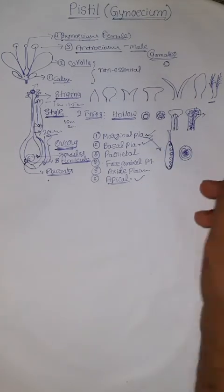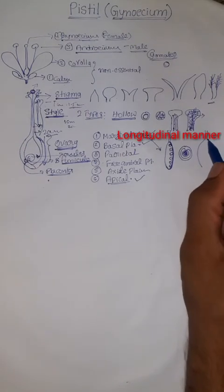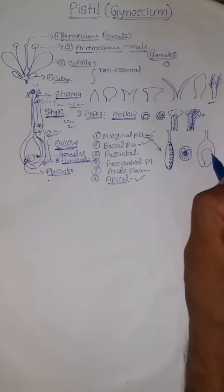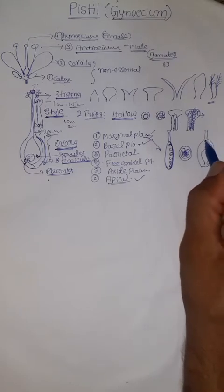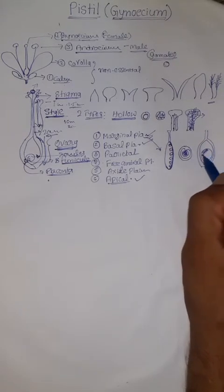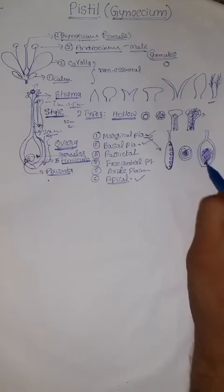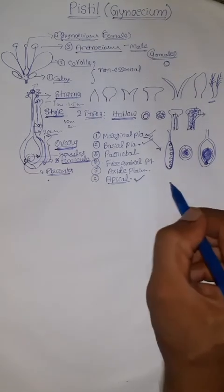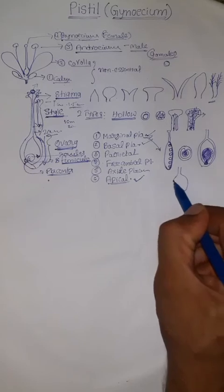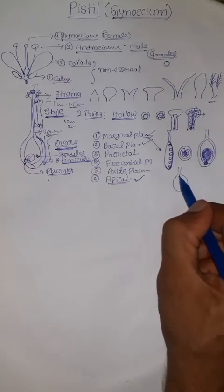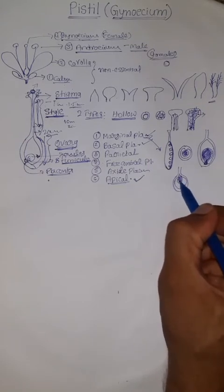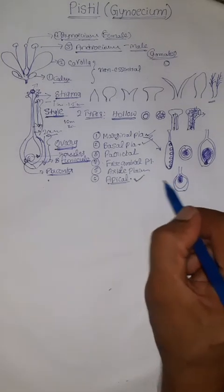The next is basal placentation. Here, we can see one ovule arising from the base of the ovary — the ovules are arranged at the base. That is why it is called basal placentation. The third one is apical placentation, where the ovule is born from the top and appears to hang downward. The ovule is attached at the apex, which is why it is called apical placentation.